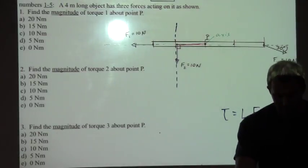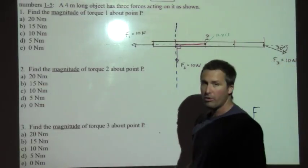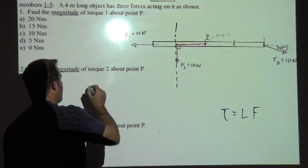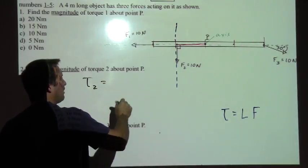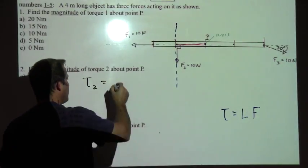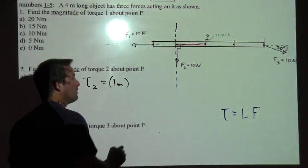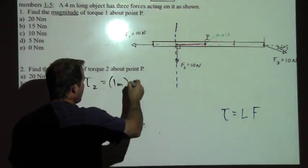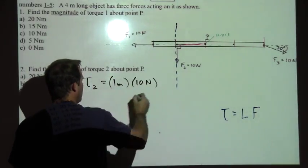And so in order to find torque two, we would just take lever arm two, which is one meter, and times the force, which is ten newtons. And so that's it, ten newton meters.